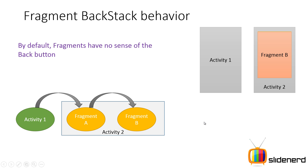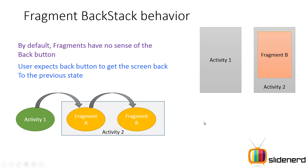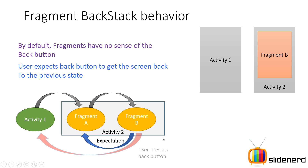When you press the back button, the user expects the screen to go back to Fragment A. But what actually happens is the user is taken to Activity 1, because the backstack by default tracks changes only across activities. It does not consider intermediate changes within the same activity in the form of fragments — fragments do not form part of the backstack by default.